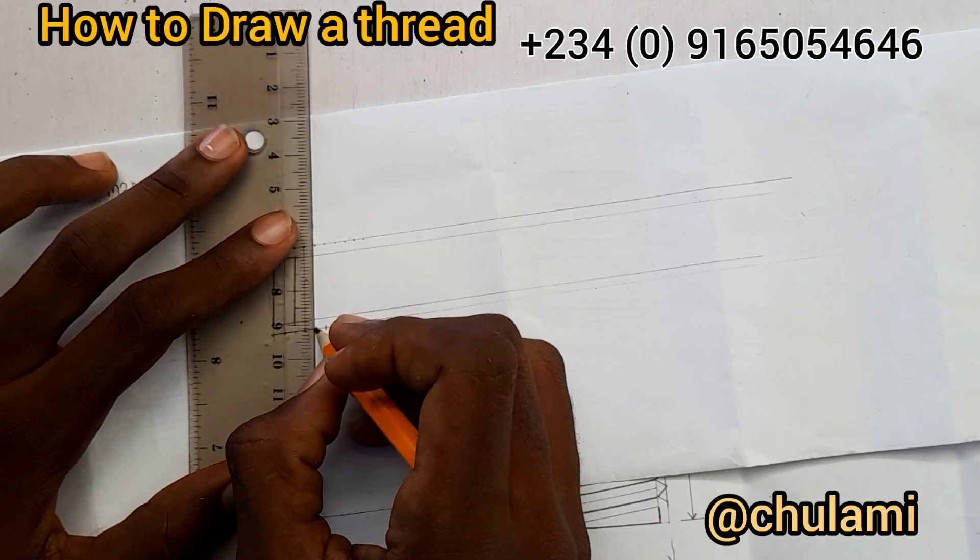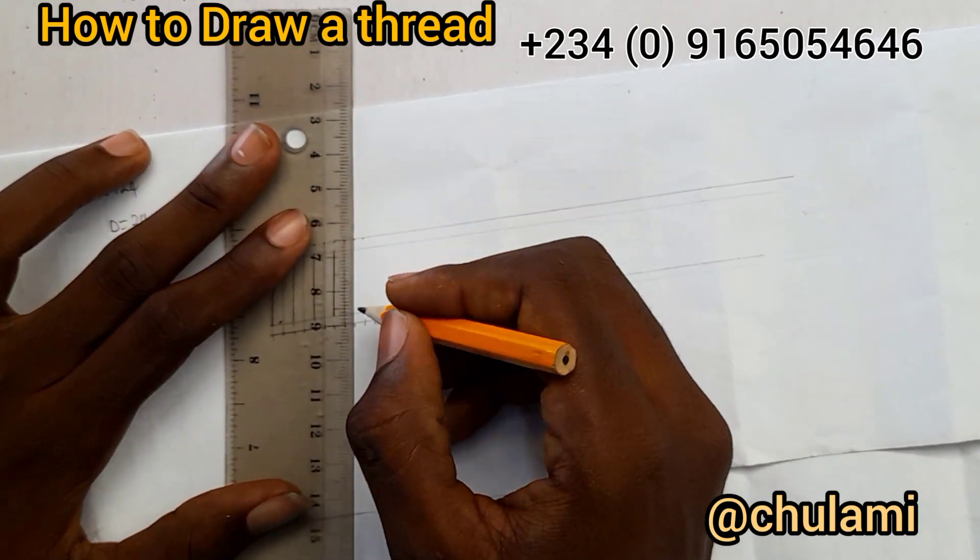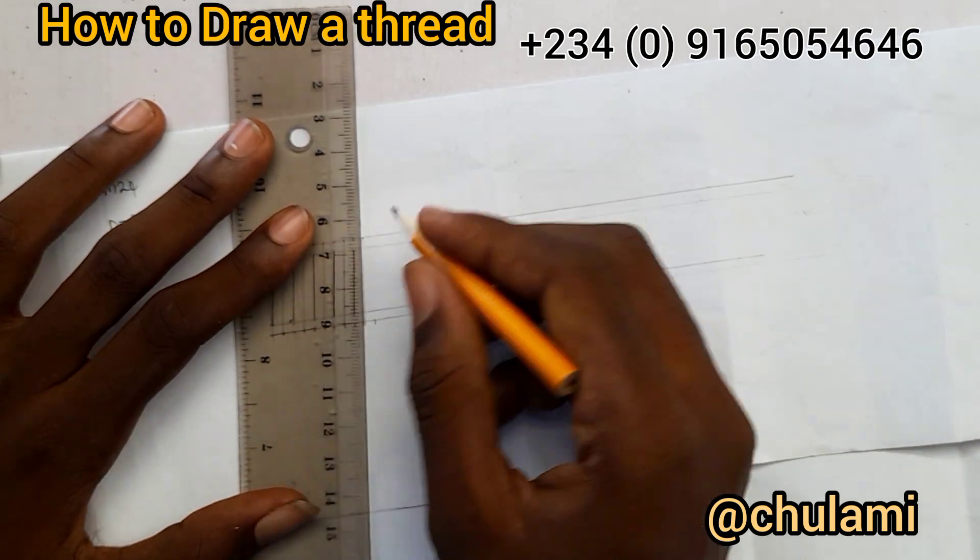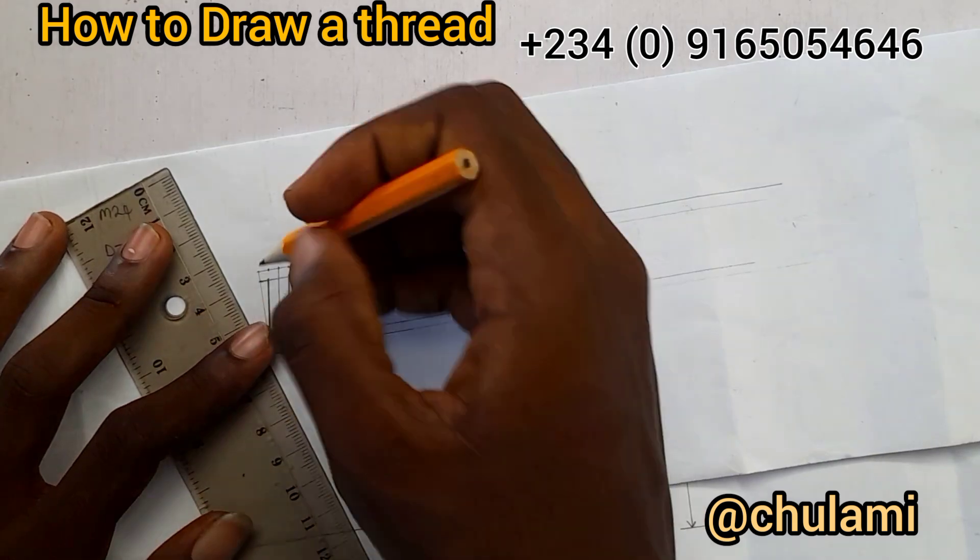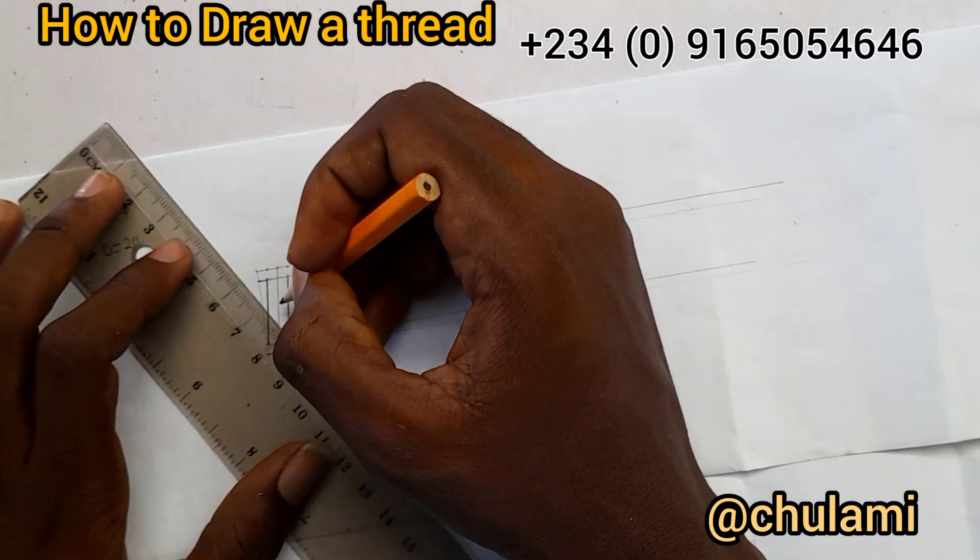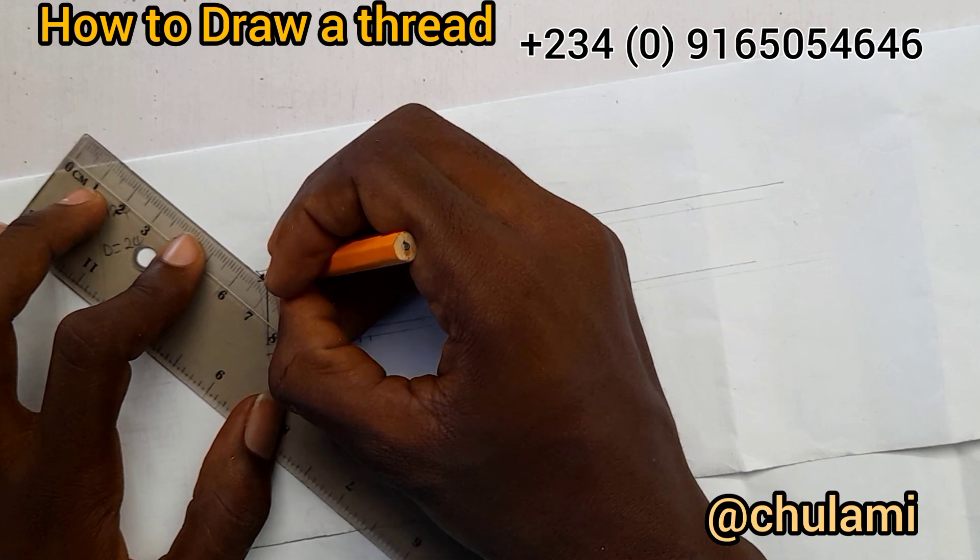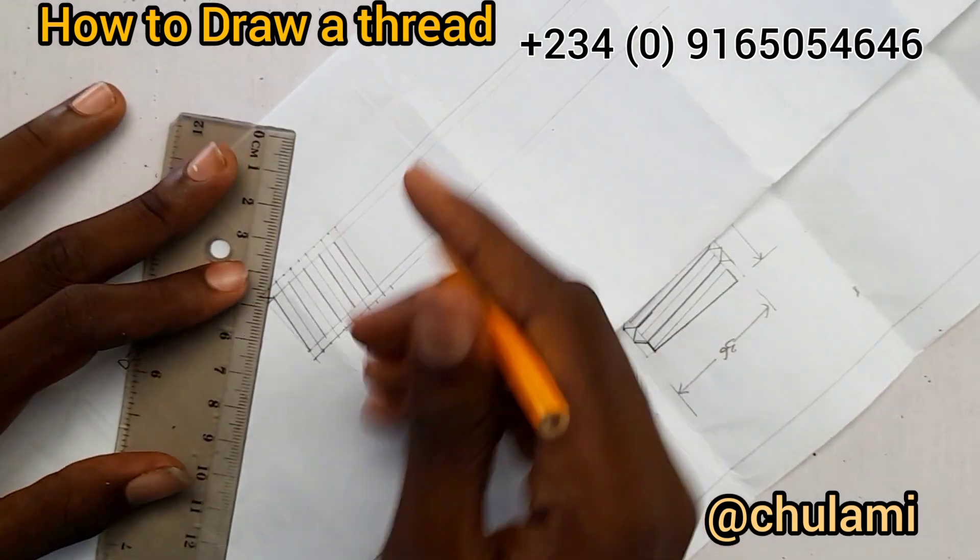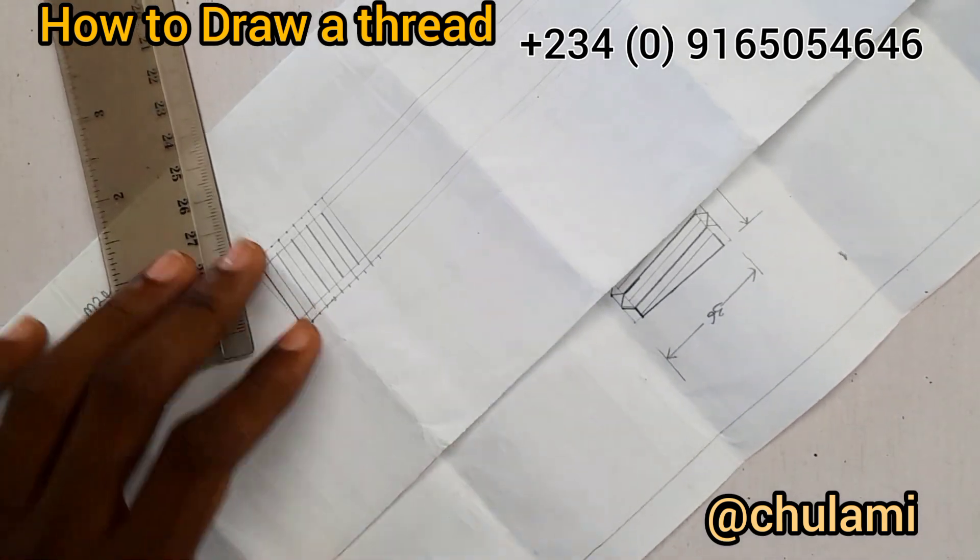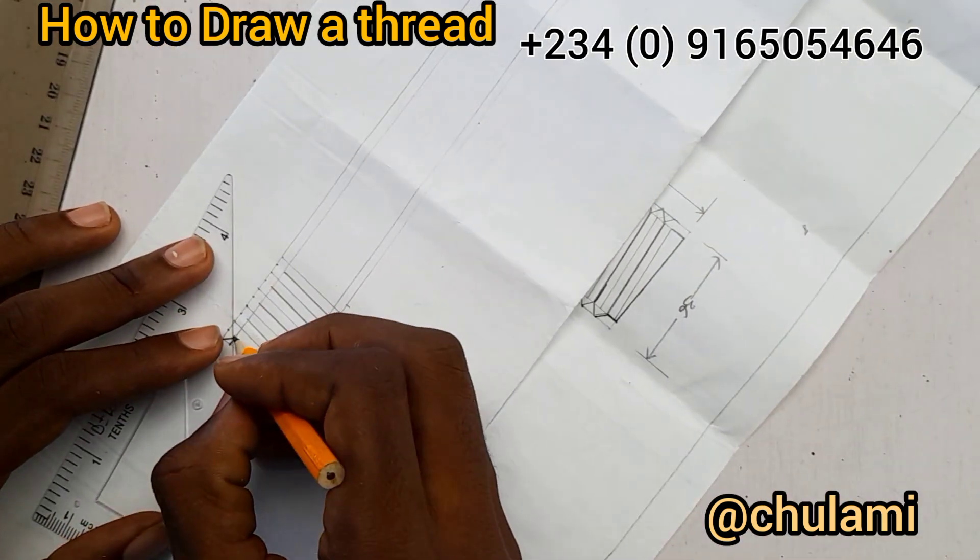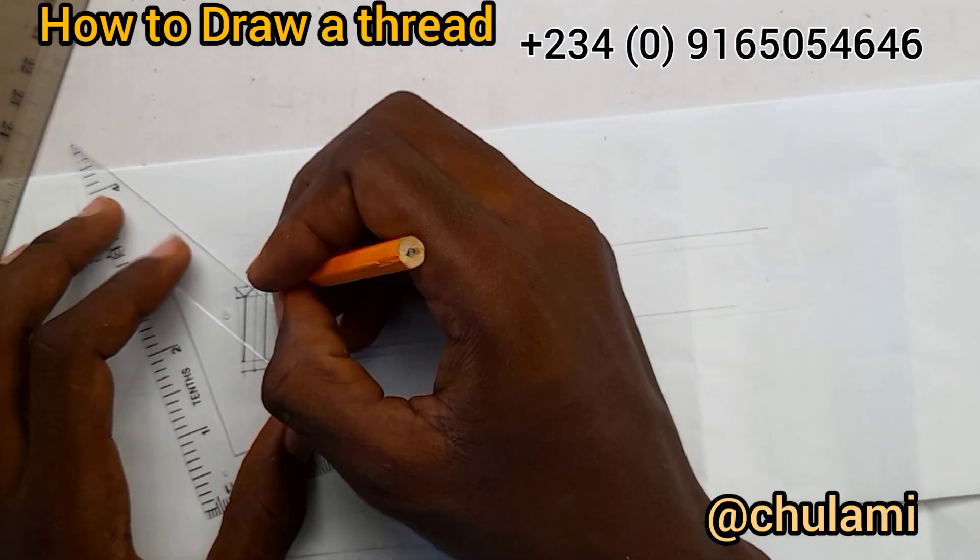All right, so I haven't done this. Now you're gonna join this point to this point, now watch. I'm gonna join this to this, okay, I'm gonna join this to this. Give me something smaller.